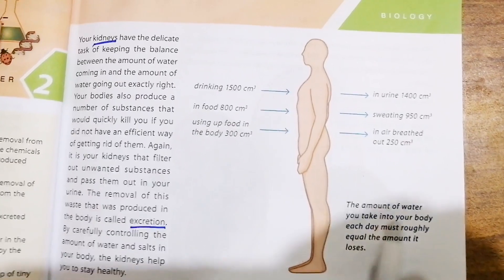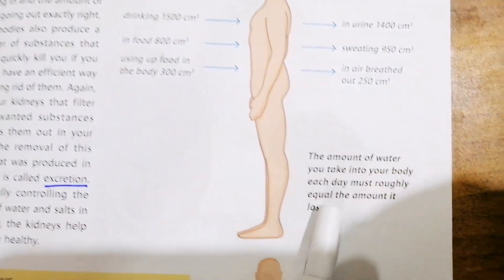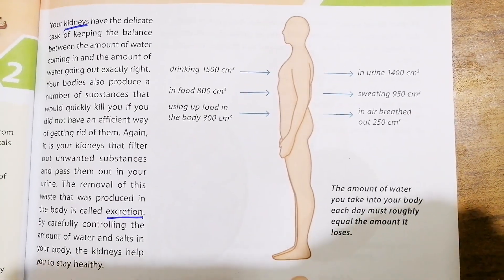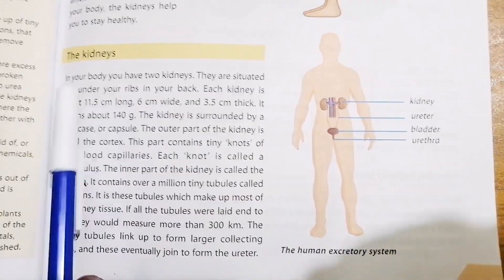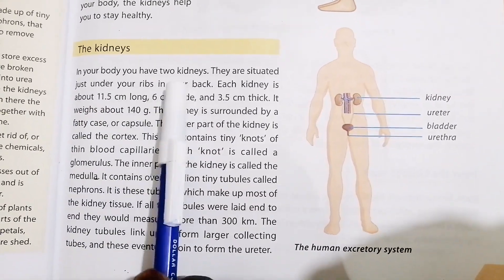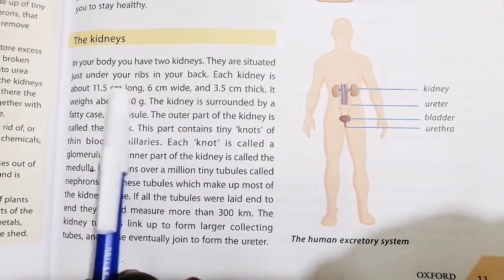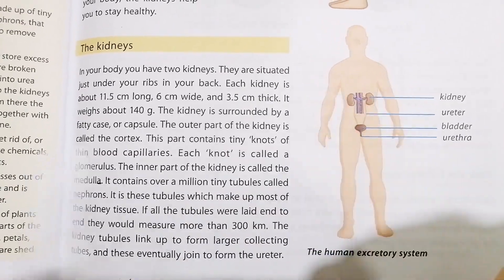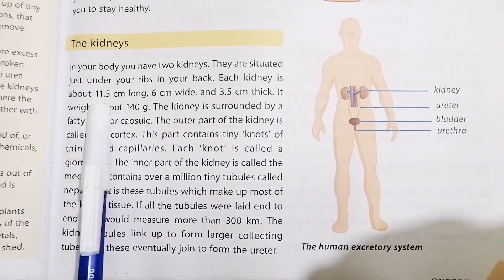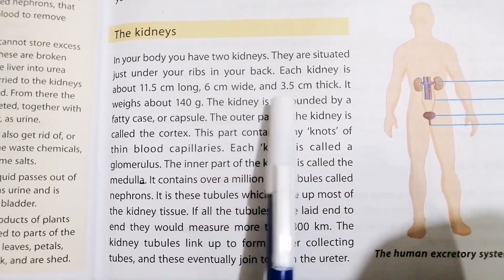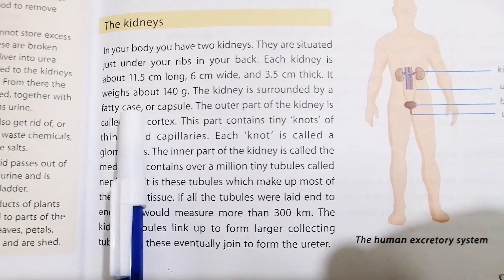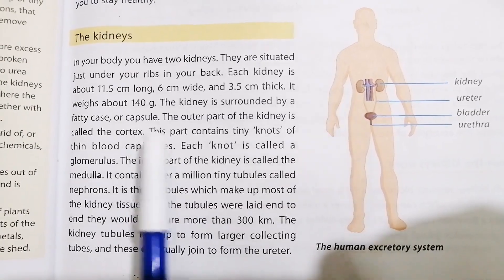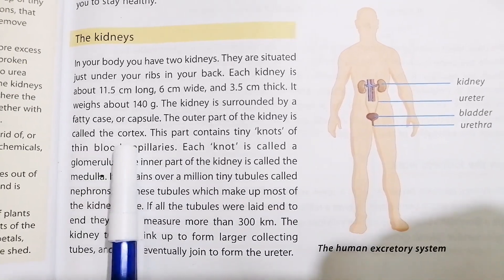The amount of water you take into your body each day must roughly equal the amount it loses. You have two kidneys, situated just under your ribs in your back. Each kidney is about 11.5 centimeters long, 6 centimeters wide, and 3.5 centimeters thick, weighing about 140 grams. The kidney is surrounded by a fatty capsule, and the outer part is called the cortex.